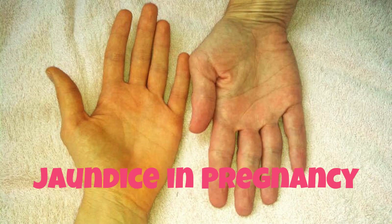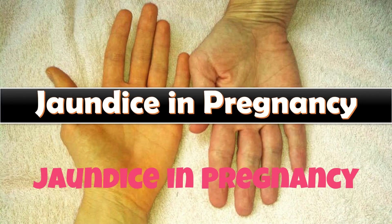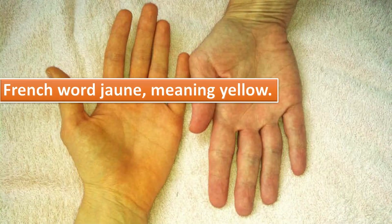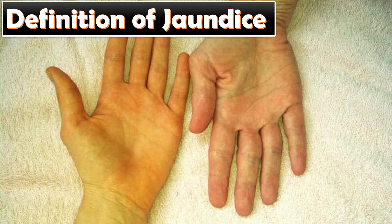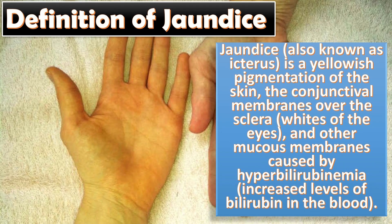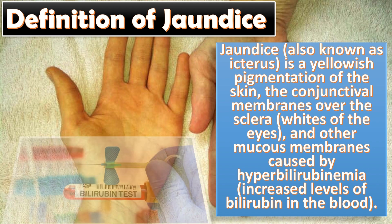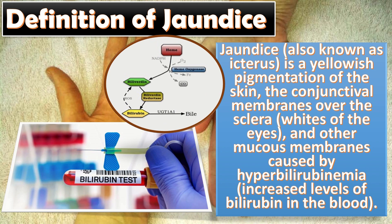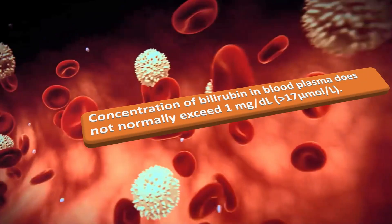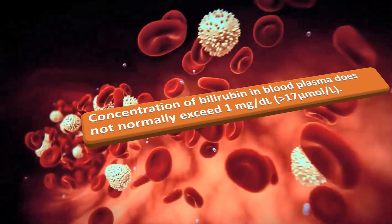The topic of our discussion today is jaundice in pregnancy. The term jaundice comes from the French word 'jaune' meaning yellow. It is a clinical marker of defect in the metabolism and/or excretion of bilirubin. Jaundice, also known as icterus, is a yellowish pigmentation of the skin, the conjunctival membranes over the sclera (the whites of the eyes), and other mucous membranes, caused by hyperbilirubinemia — an increased level of bilirubin in the blood, which subsequently causes increased bilirubin in the extracellular fluid.